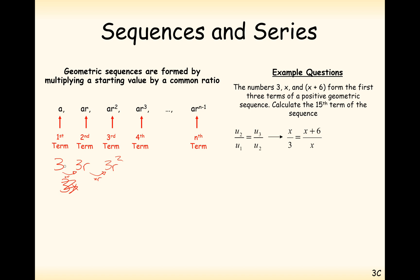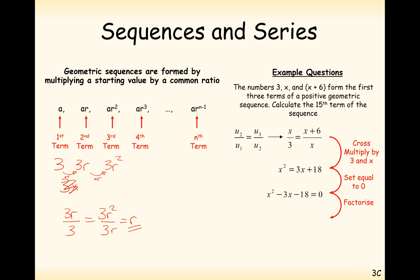The second term divided by the first term must equal the same common ratio as the third term divided by the second term. So x over 3 equals x plus 6 over x, and since the common ratios must be equal, we set them equal. Solving the resulting quadratic — and since we only have a positive geometric sequence, we take the positive value — x is 6. So the sequence is 3, 6, 12, and the common ratio is 2.